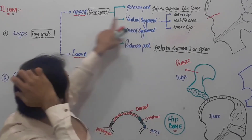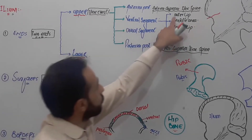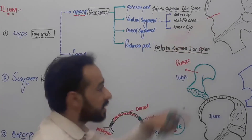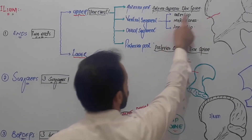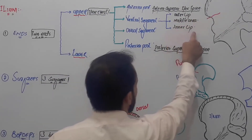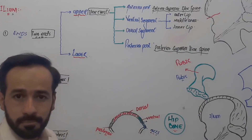The ventral segment of the iliac crest has three important markings: the outer lip, the middle area, and the inner lip.